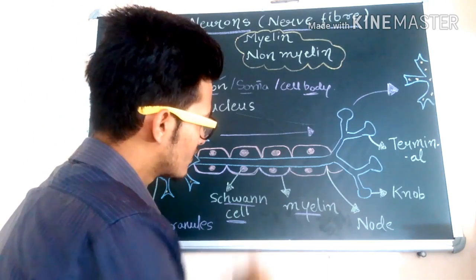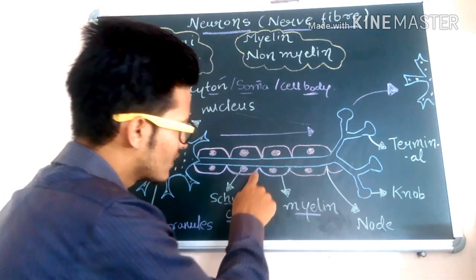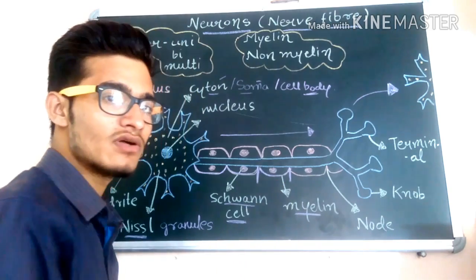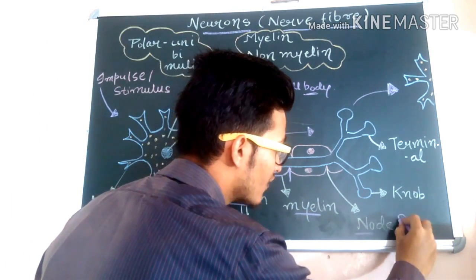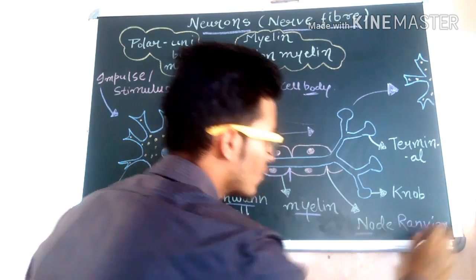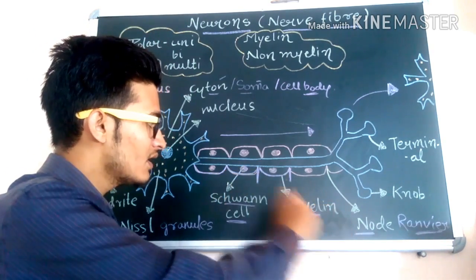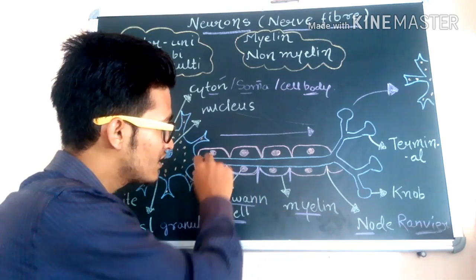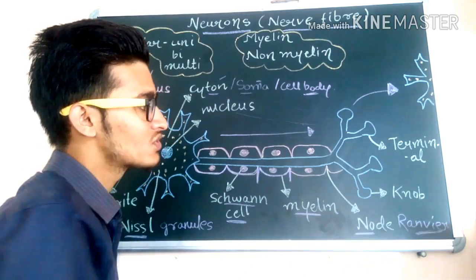The gap between two Schwann cells is known as a node, and the characteristic name of these nodes is nodes of Ranvier. There are different kinds of gaps between the Schwann cells of a particular nerve fiber, which form a covering known as the myelin sheath around a particular axon, and those nodes are known as the nodes of Ranvier.